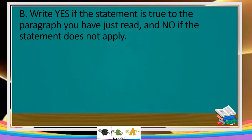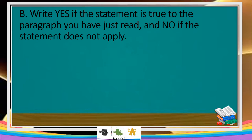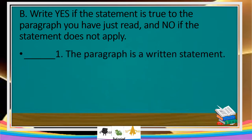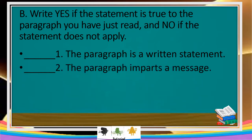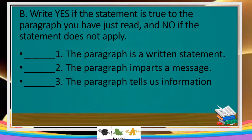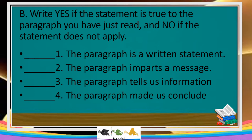Additional activity: Write 'yes' if the statement is true to the paragraph you have just read, and 'no' if it does not apply. Number 1 — the paragraph is a written statement. Number 2 — the paragraph imparts a message. Number 3 — the paragraph tells us information. Number 4 — the paragraph made us conclude.